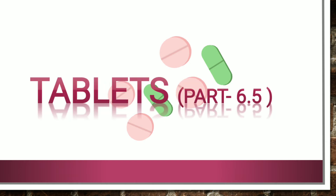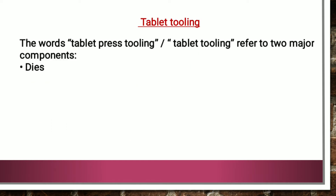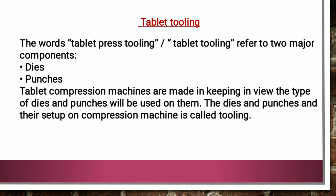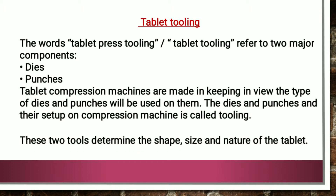Hello students, in this video we are going to study about tablet tooling. The word tablet press tooling or tablet tooling refers to two major components: the first one is the die and the second one is the punches. The tablet compression machines are made keeping in view the type of dice and punches used on them. The dice, punches, and their setup on the compression machine are together known as tooling.